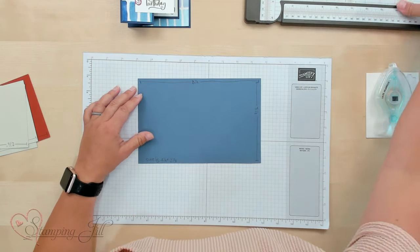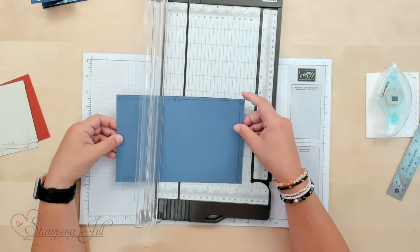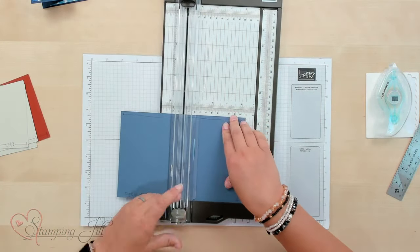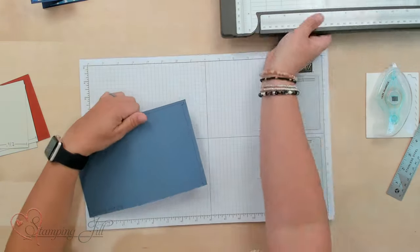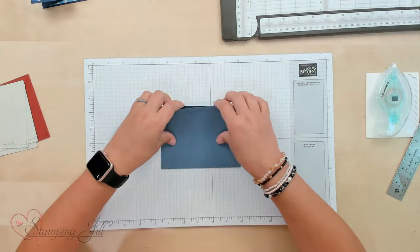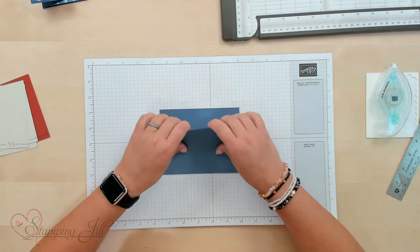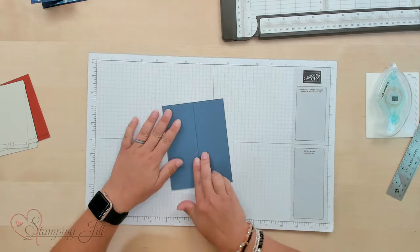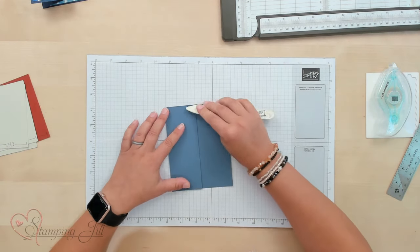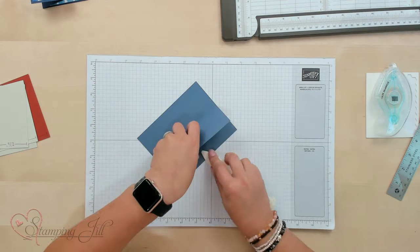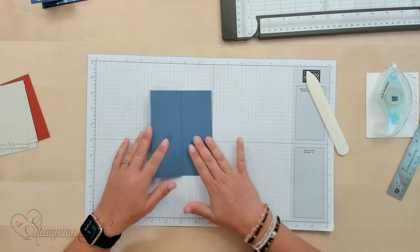So I'll bring in my Stampin' Trimmer and with my scoring blade I'm just going to score that at 4 1/4 and at 2 1/8. And then this is a familiar fold here. It's just going to be the fold in half and then fold back onto itself just like that. I like to use a scoring tool and just get those lines nice and folded with my bone folder.